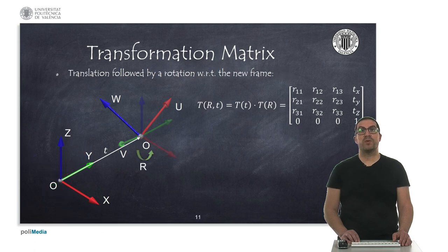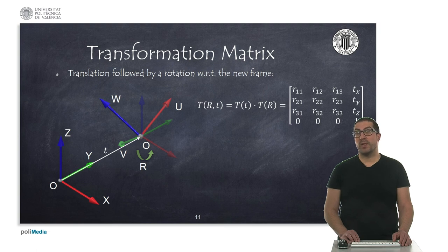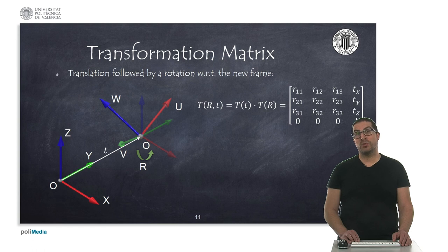Similarly, a transformation matrix can also be seen as a translation followed by a rotation with respect to the mobile frame — that is, the frame that has already been translated. We will see all of this in more detail in the second part of the presentation, in which we will show how to compose those transformations.